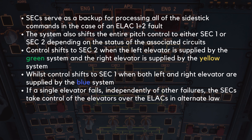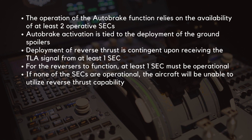If a single elevator fails, independently of other failures, the SECs take control of the elevators over the ELACs in alternate law. The operation of the autobrake function relies on the availability of at least two operative SECs. This requirement stems from the fact that autobrake activation is tied to the deployment of the ground spoilers. Similarly, the deployment of reverse thrust is contingent upon receiving the thrust lever angle signal from at least one SEC. Therefore, for the reversers to function, at least one SEC must be operational. If none of the SECs are operational, the aircraft will be unable to utilize reverse thrust capability. These dependencies underscore the critical role of SECs in facilitating essential braking and thrust management functions during the landing phase.